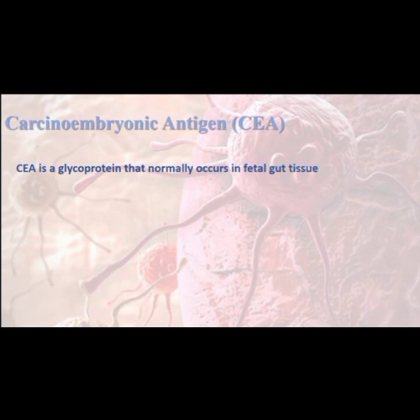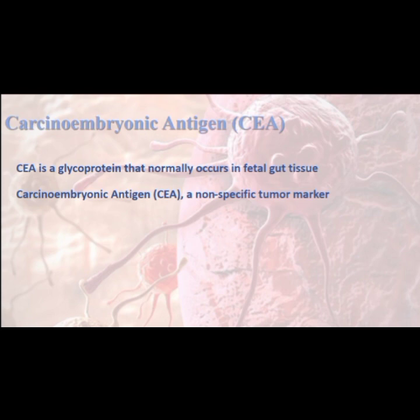By birth, detectable serum levels disappear. In the early 1960s, CEA was found to exist in the bloodstream of adults who had colorectal tumors. It was originally thought to be a specific indicator of the presence of colorectal cancer. Subsequently, however, this tumor marker has been found in patients who have a variety of carcinomas and even some benign diseases. Chronic smokers also have elevated CEA levels.